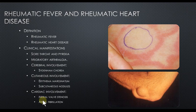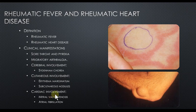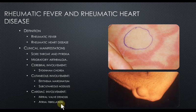Cardiac involvement can manifest as inflammation of the mitral and aortic valves. With recurrence, this can result in scarring, fibrosis, stiffening, and distortion of the valves, leading to mitral valve stenosis and sometimes atrial fibrillation. These are common sequelae of cardiac involvement, and after many years, if untreated, heart failure may develop.